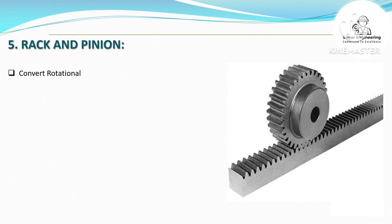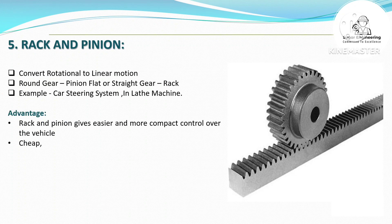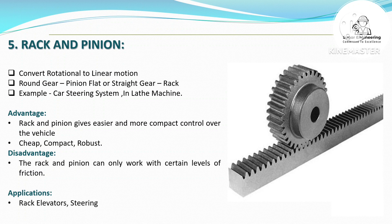Rack and Pinion — converts rotational to linear motion. It consists of a round gear (pinion) and a flat or straight gear (rack). Examples include car steering systems and lathe machines. Advantage: gives easier and more compact control over the vehicle.